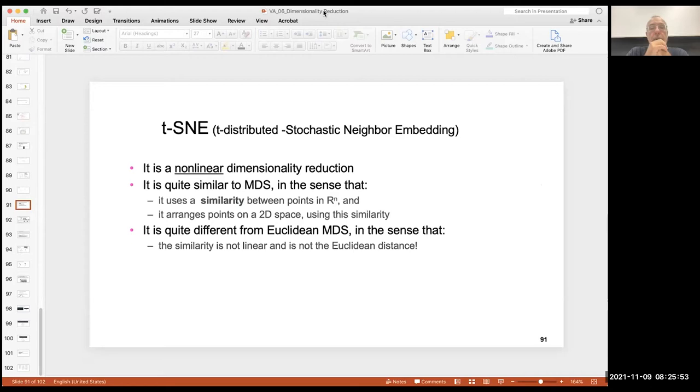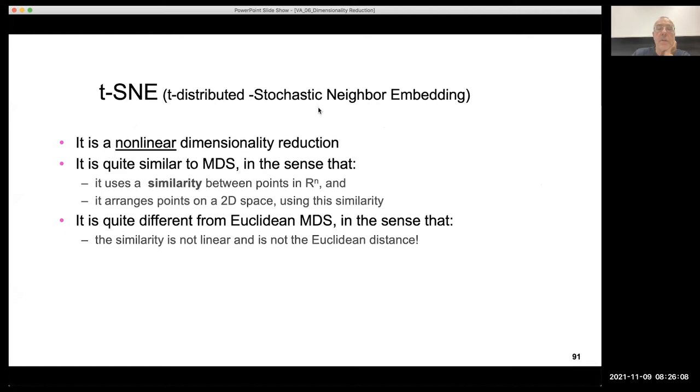We are back into dimensionality reduction. We already saw PCA and MDS. Now we are going to discuss quickly about t-SNE, T-distributed Stochastic Neighbor Embedding. Let's give it a basic definition. It is nonlinear dimensionality reduction.